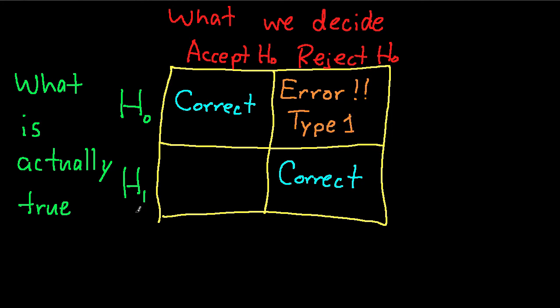And finally, if h1 is actually true, but we decide to accept h0, then again, we've made an error. This type of error is called a type 2 error.